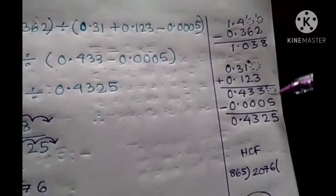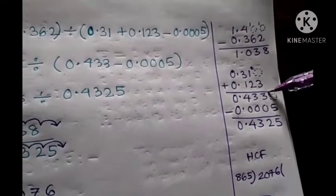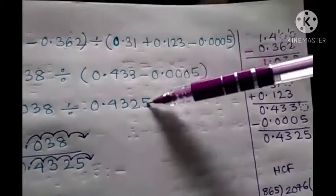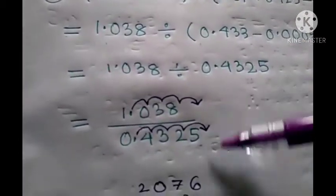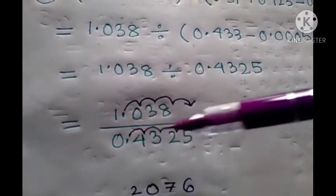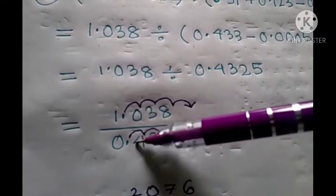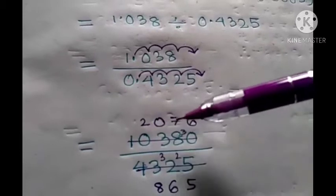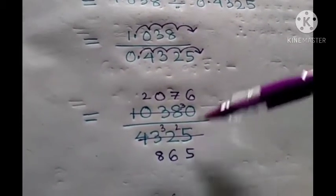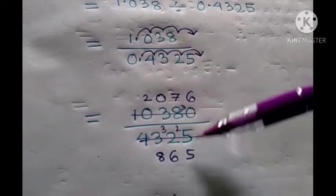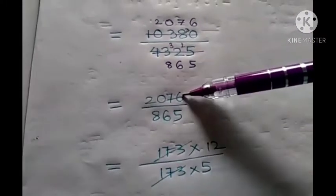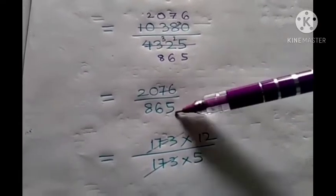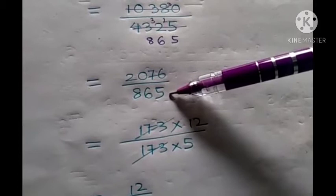Then I subtract this. For subtraction I need that zero — I carry one, make a 10, and subtract. This is the answer for the bracket. Now for division, we place one below the other and we need a decimal-free denominator. There are four places to be removed from this decimal, so here also one, two, three, four. If the decimal is here we need to fill up this place with a zero, so it becomes 10380 by 4325. These two end with zero and five so they are divisible by five — I cancel by five and arrive at these two numbers.